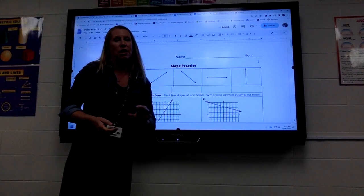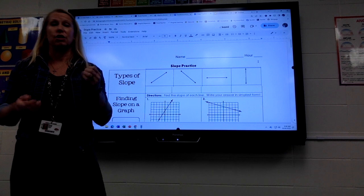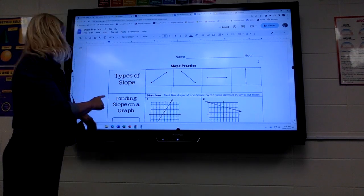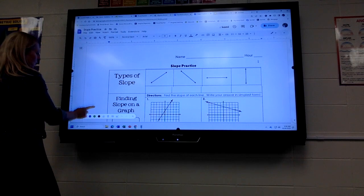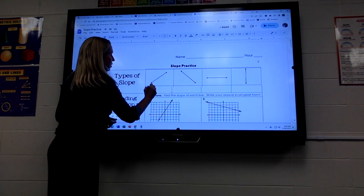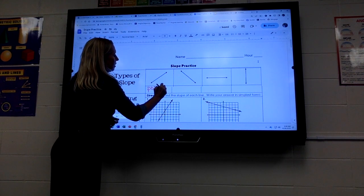So the first section, I just want you to go through and remember whether the slope is positive, negative, zero, or undefined. So on this first one, if the line is going up from left to right, it is positive. So I just want you to put positive.